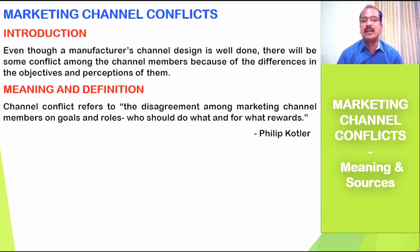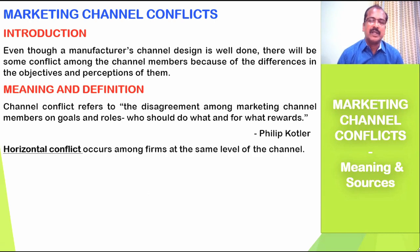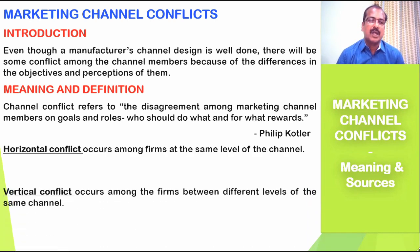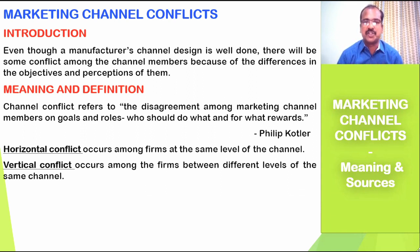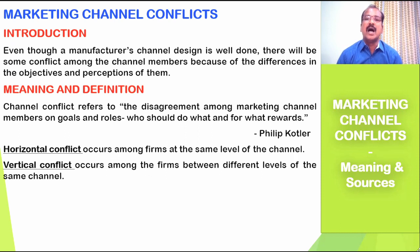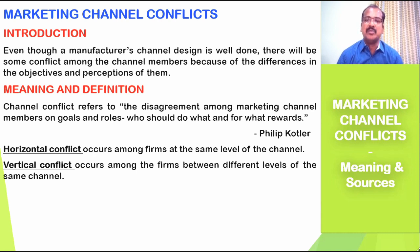There are two types of conflicts. One is horizontal conflict and the other one is vertical conflict. Horizontal conflict occurs among the firms or organizations at the same level of the channel — conflicts between dealers, conflicts among wholesalers, or conflicts among retailers. So disagreement in roles and rewards between channel members at the same level refers to horizontal conflict.